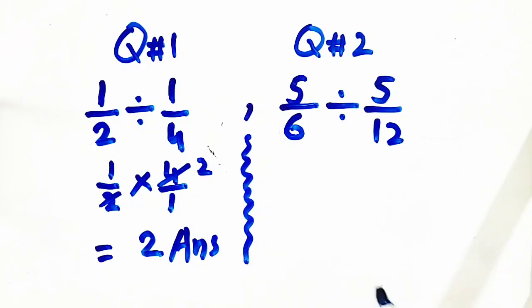Now, question number 2 is 5 by 6 divided by 5 by 12. Its answer is not 25 divided by 72.